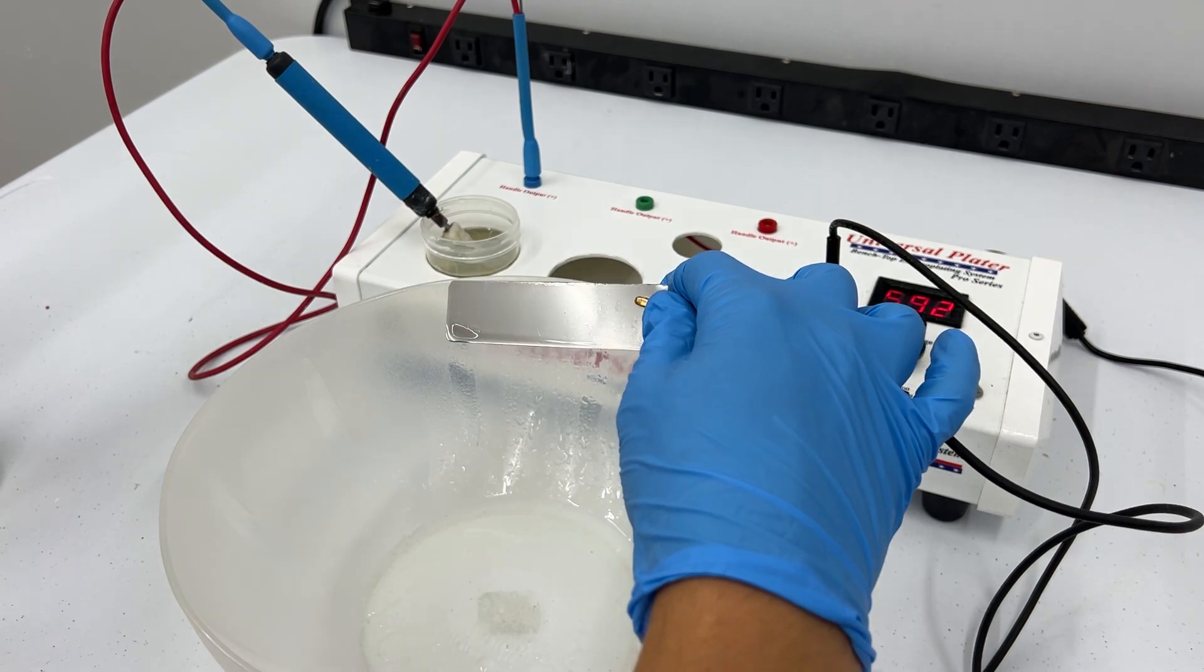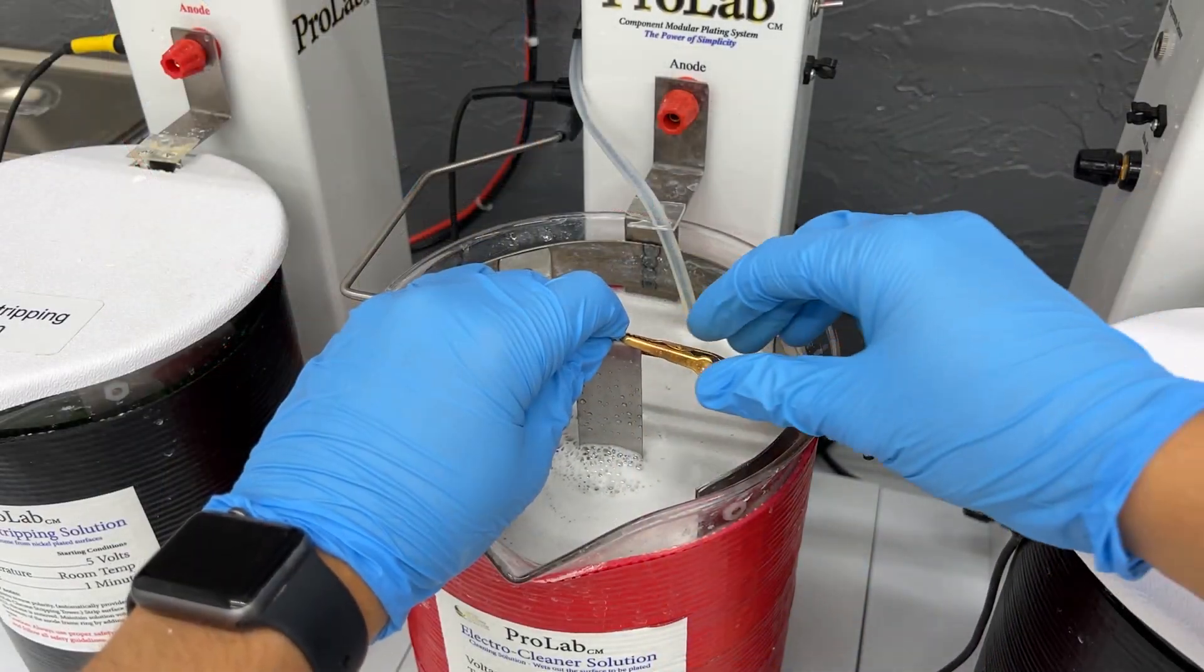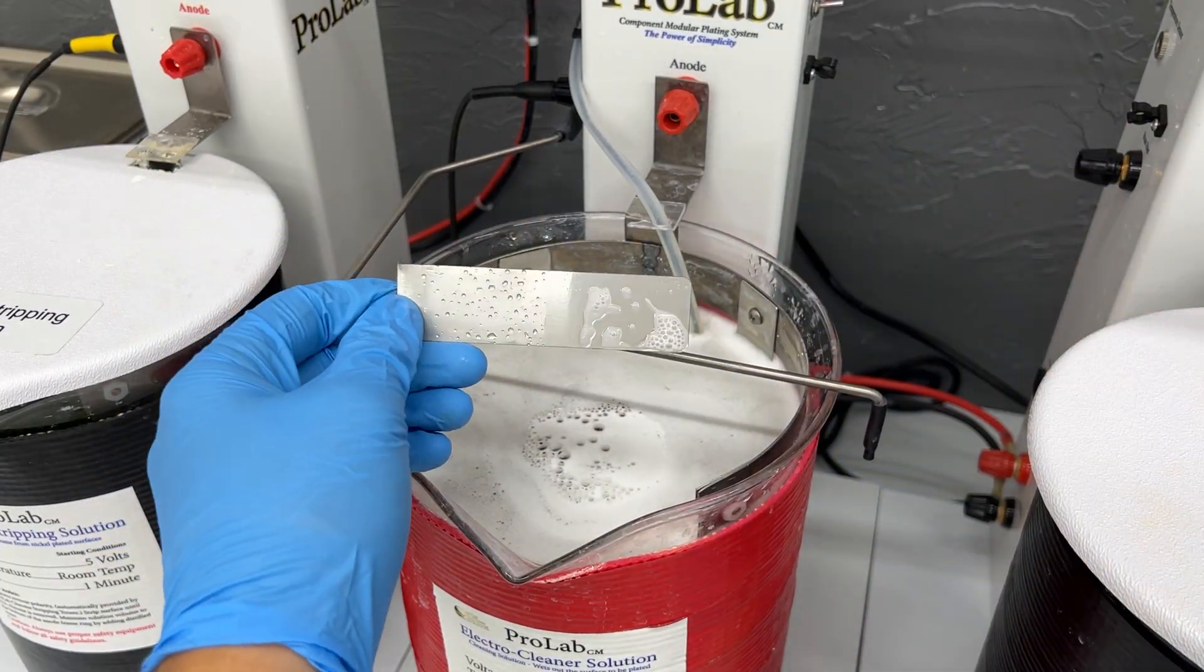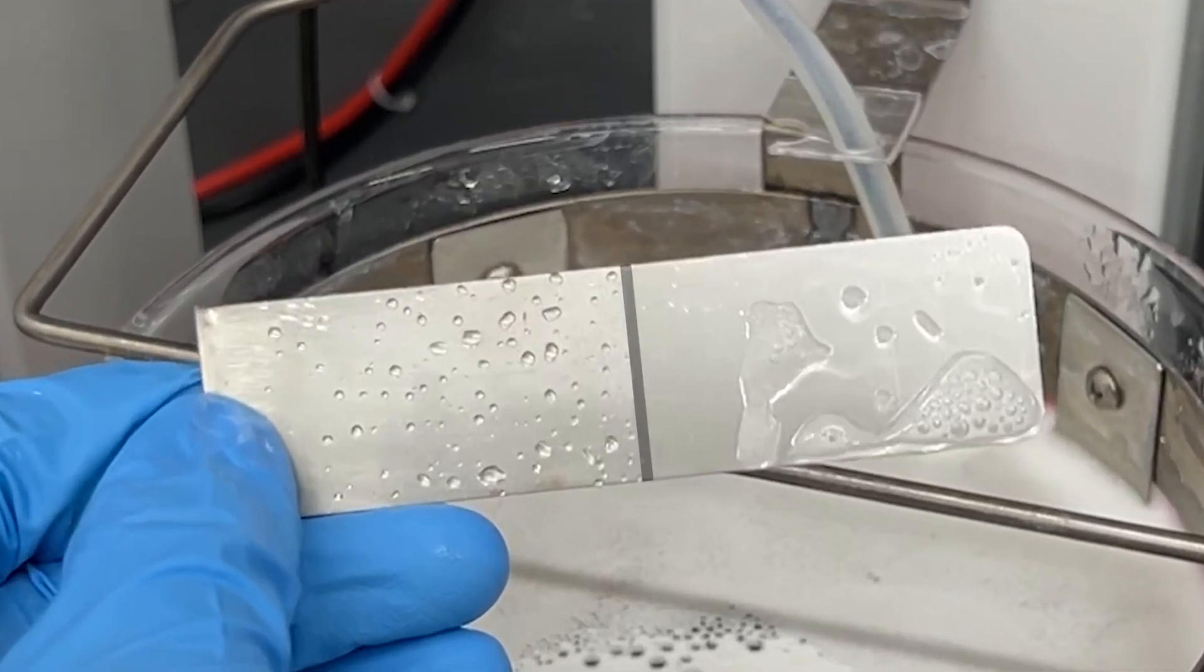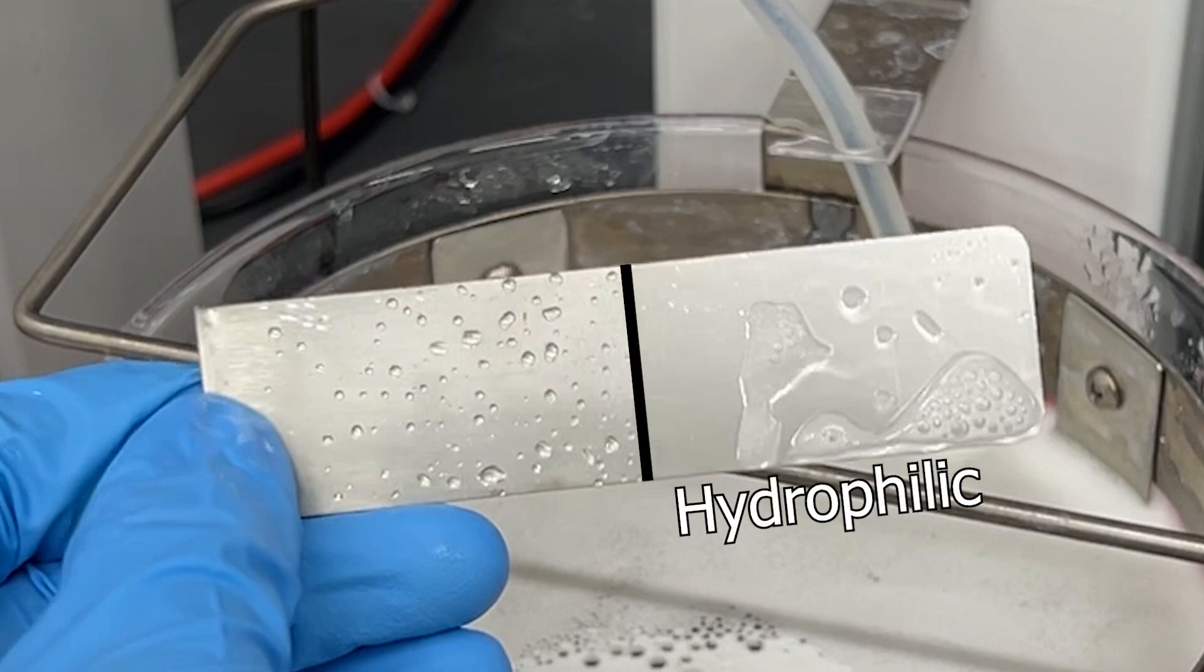So how can you tell if an item is wet out or not? As you can see on this piece of stainless steel, the right side is hydrophilic, attracting the water, and is ready for the next step in the plating process.